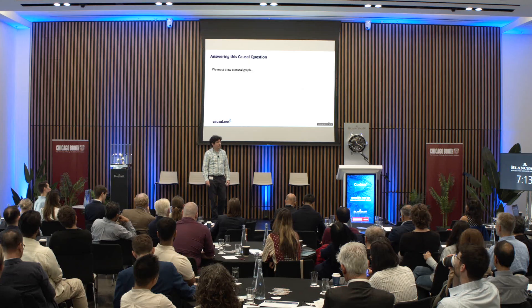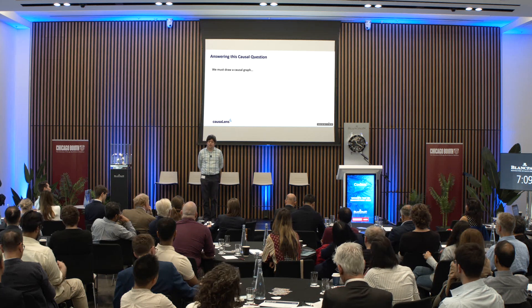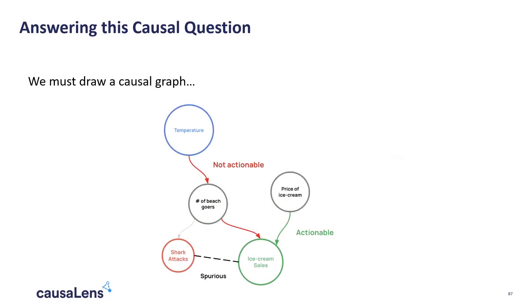This is why we need to embed causality and completely rethink the way we build many of these models. In causal modeling, we build something called a causal graph, and this graph is the brain of the entire AI. If we as humans start to draw the graph for this problem, we find that temperature is a factor that drives the number of people who go to beaches, which then drives ice cream sales. And — I'm sorry, there seems to be an edge missing — but the number of beach goers drives the number of shark attacks.